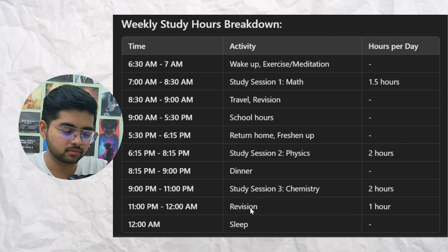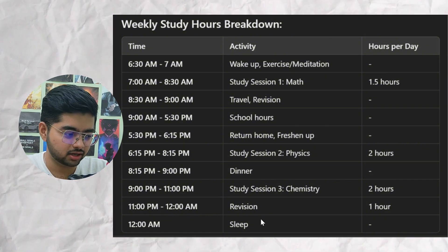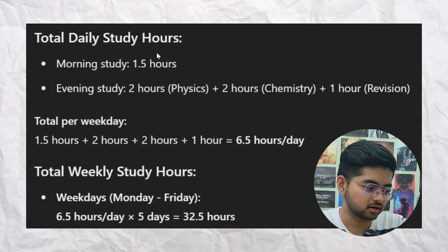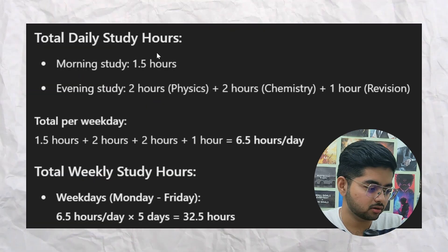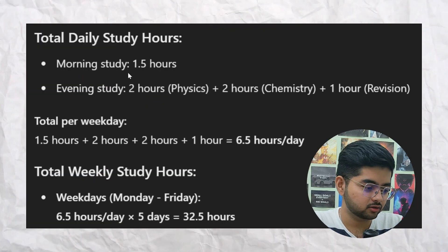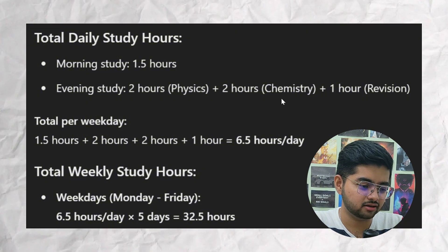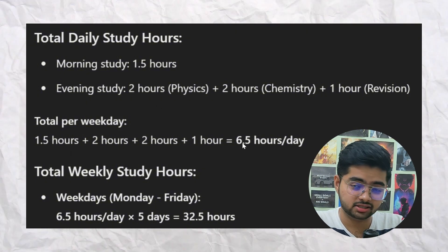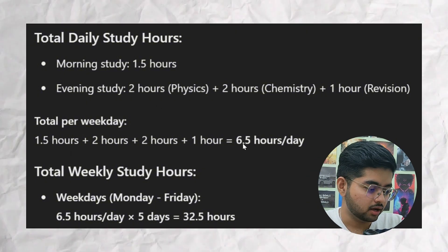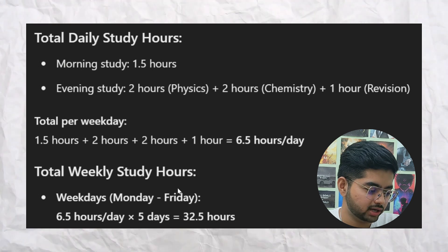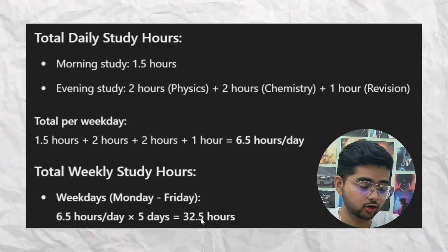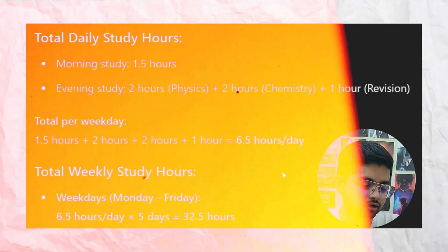From 11 to 12, the last one hour, you will revise whatever you learned throughout the day. At 12 AM you sleep and wake up again at 6:30. So total daily study hours will be: morning one and a half hours, evening two hours physics, two hours chemistry, and one hour revision — a total of six and a half hours per day. Multiplied by five days, that is 32.5 hours per week.